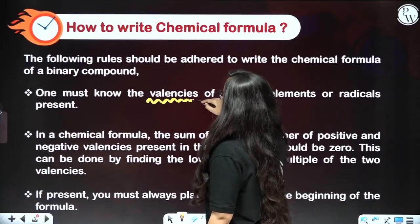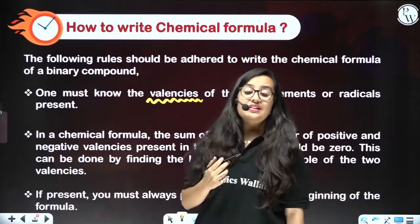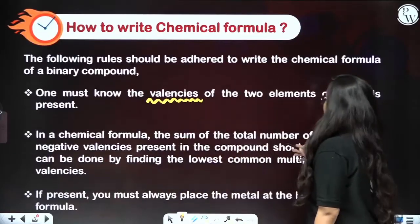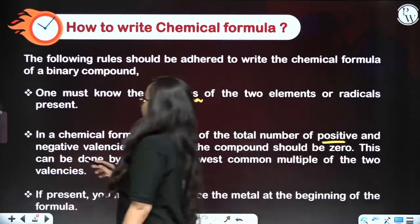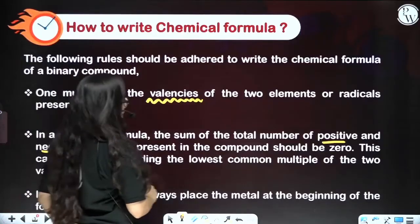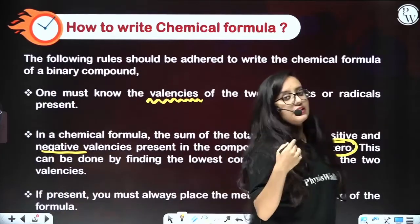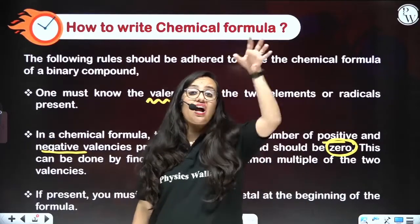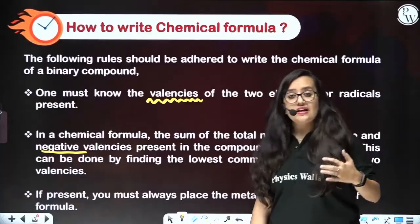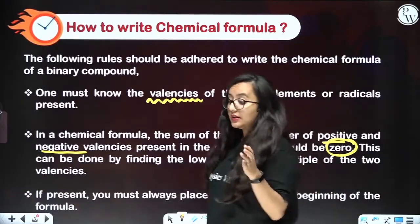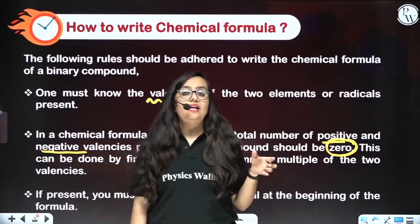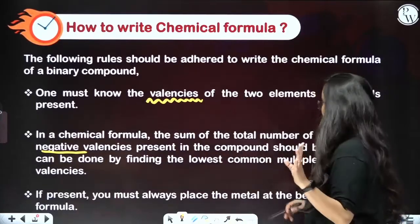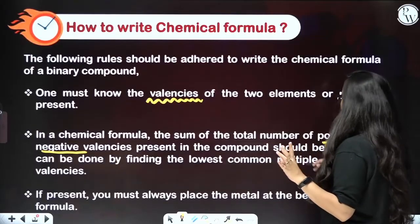In a chemical formula, the sum of the total number of positive and negative valencies should be zero — meaning the compound or molecule should be neutral, provided there is no charge on it. You must balance it such that the negative valencies cancel out the positive valencies, so the overall charge becomes zero. This can be done by finding the lowest common multiple of the two valencies.